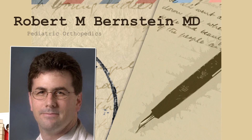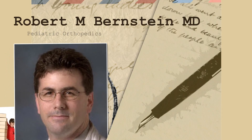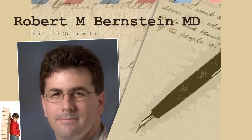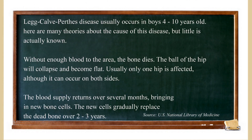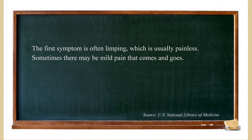Legg-Calvé-Perthes disease, or Perthes disease, is an abnormality of the blood supply to the femoral head. We don't really understand why it happens, but it occurs in growing children somewhere between the ages of 3 and 10. There are multiple episodes where part of the blood supply to the femoral head is disrupted, that portion of the femoral head dies, gets replaced by fibrous tissue, and then gradually gets replaced by bone.